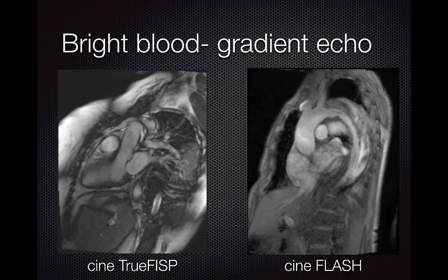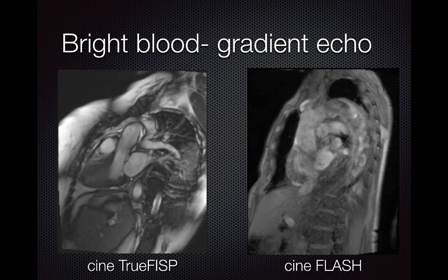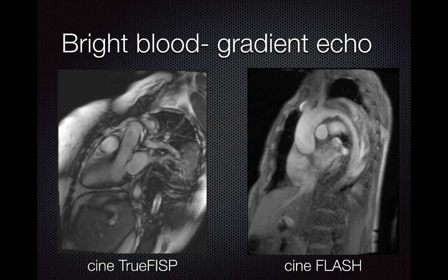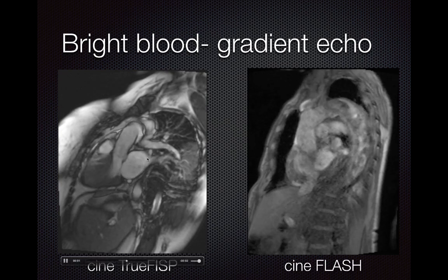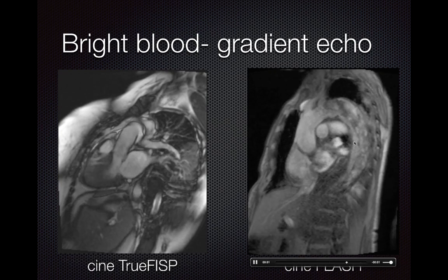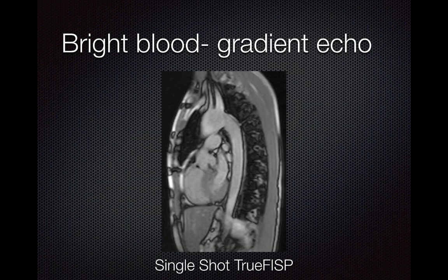Here are examples of bright blood gradient echo images — both CINE pulse sequences. The one on the left is a balanced steady-state free precession versus the one on the right which is a spoiled gradient echo. On the left, blood brightness is essentially uniform throughout the entire cardiac cycle regardless of flow velocity. On the right, this case of dissection shows high-velocity blood much brighter than low-velocity blood: the true lumen during systole is very bright, while during diastole with slower flow the blood is much darker. The single-shot balanced SSFP gives one image per breath hold across multiple slice locations.